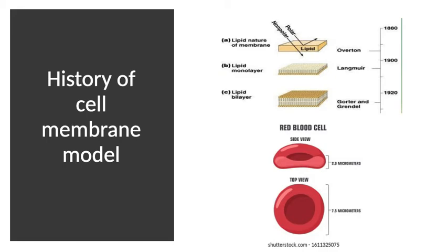This raised a question, and they made a hypothesis: the phospholipid creates a bilayer, or double layer, as seen in the timeline diagram. This explained why the extracted phospholipid surface area was double that of the red blood cell — because the phospholipid forms a bilayer. This discovery leads to the fulfillment of the next feature of the plasma membrane.